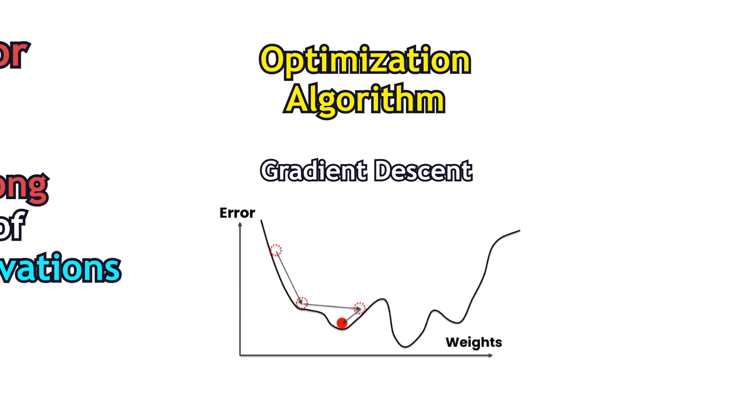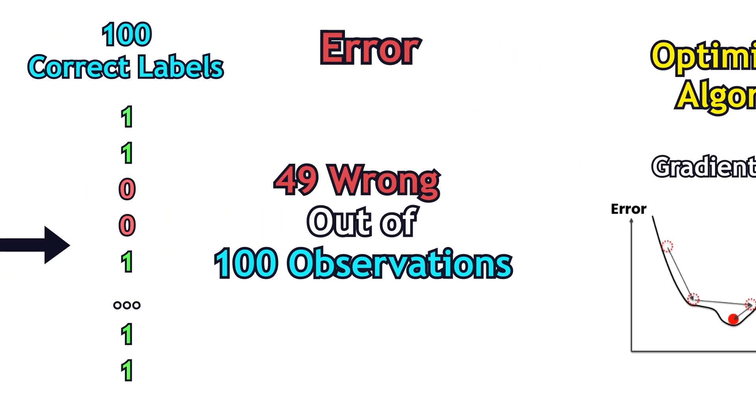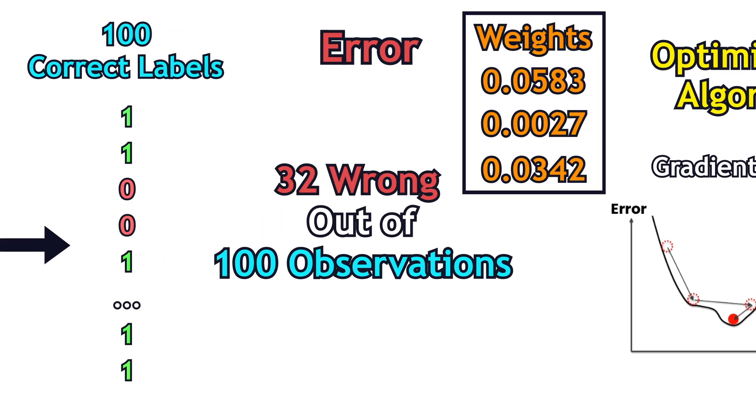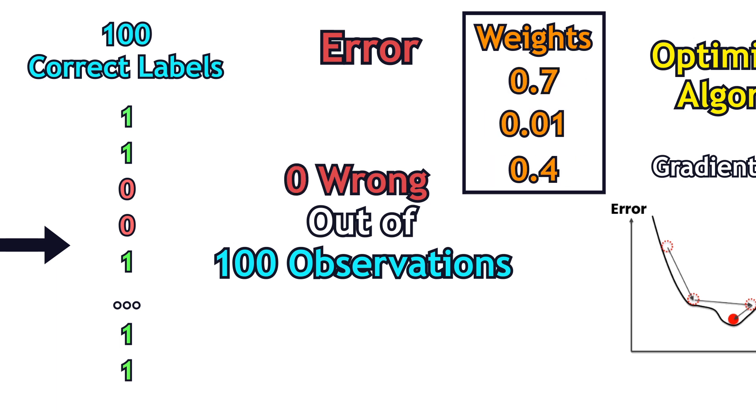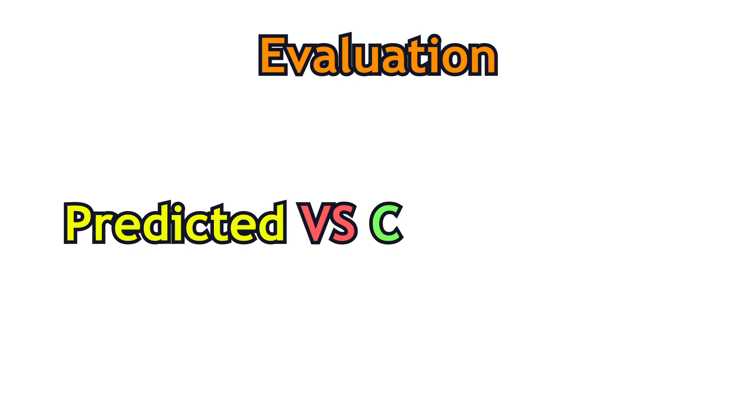In each iteration, the number of wrong predictions is decreased because the algorithm finds those weights that make the model predict the most correct answers in the dataset. The evaluation of a supervised algorithm is the easiest, as we just compare the predicted labels with the true labels from the original dataset.